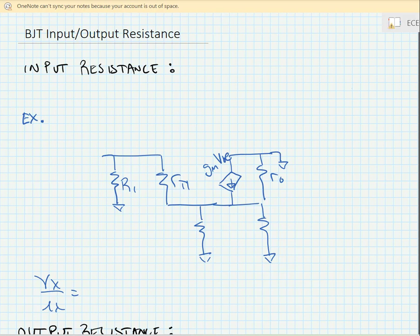Sometimes it's important to know what the input and output resistance of a circuit is so you can figure out how much it loads a circuit that's going to be preceding it or how much it contributes to a subsequent circuit that it might be driving. In order to find the input resistance, we're going to put a test voltage and measure the test current that flows through it.